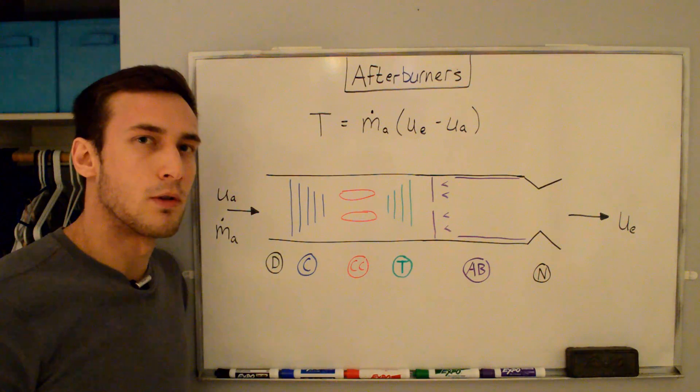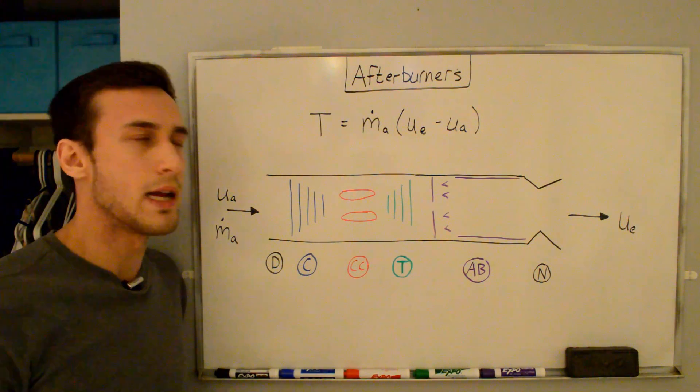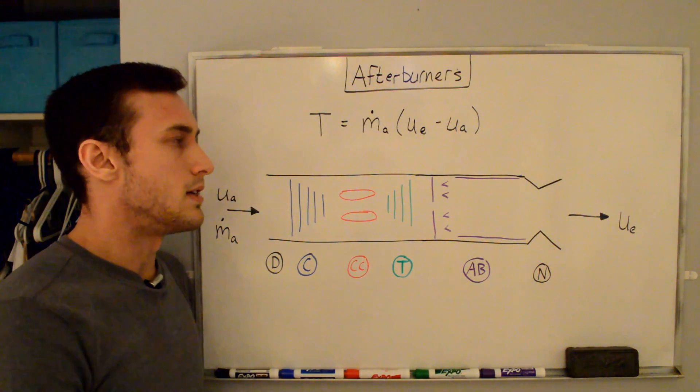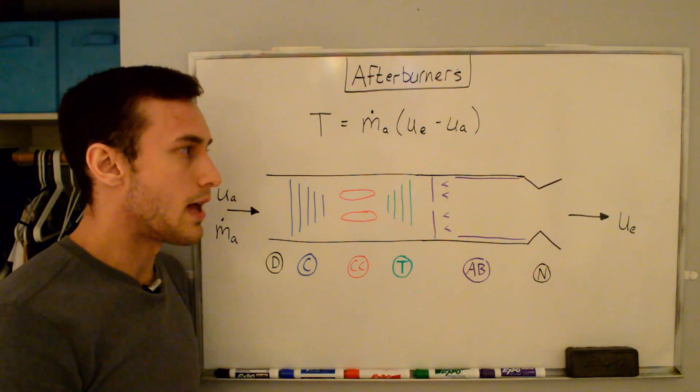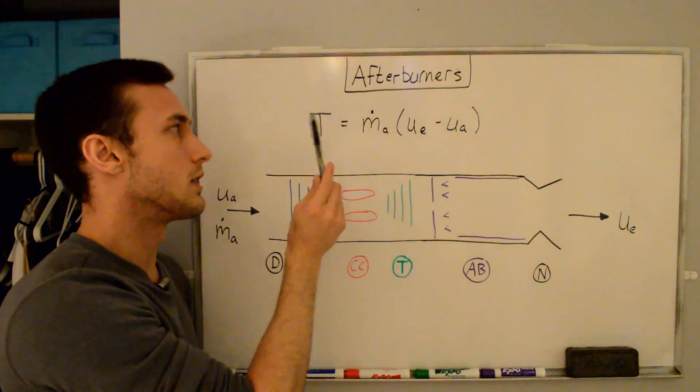This means that there's excess air left over in the engine that wasn't used during combustion, and we can take advantage of this excess air later by adding some fuel to it and burning it. This increases the energy of the gases in the engine even further, and we can take advantage of this increase in energy by converting the energy into kinetic energy in the form of an increased exhaust velocity, which thus increases our thrust.